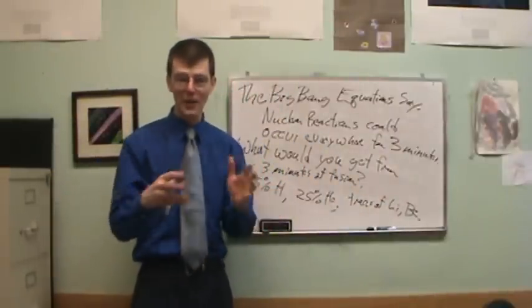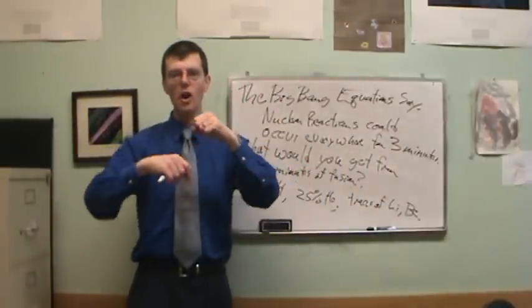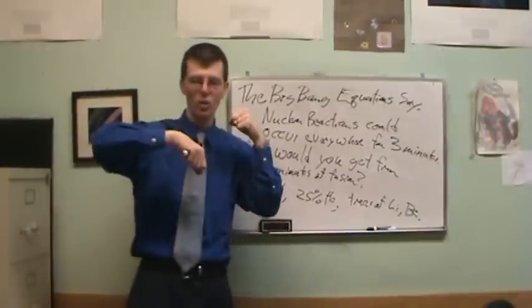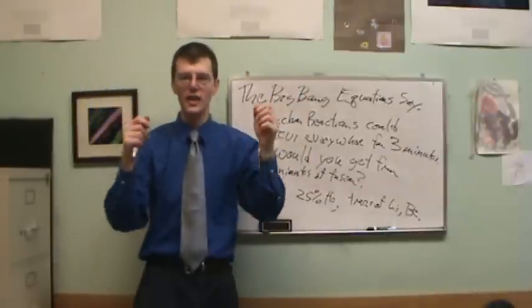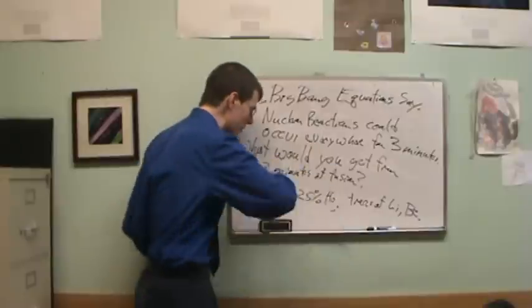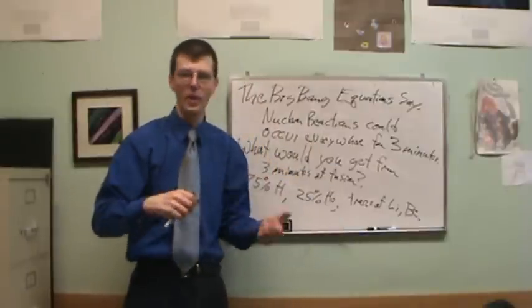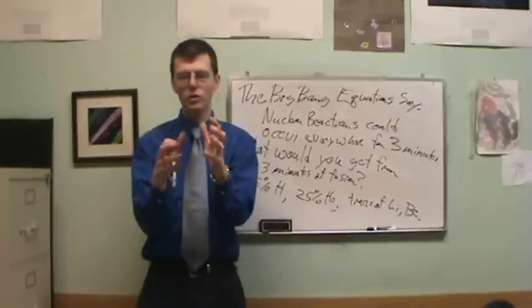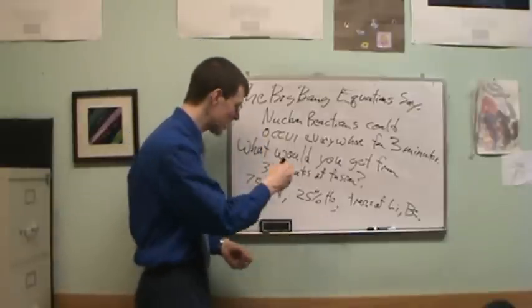If the Big Bang equations are right, then after those first three minutes, there should be no carbon nuclei, no iron, no oxygen, no nitrogen, no lead, no fluorine, no uranium, none of these other elements. The whole universe should be filled with exactly this stuff. Now, of course, today we see there is carbon out there, there is nitrogen, there is oxygen. We think those were made inside stars.